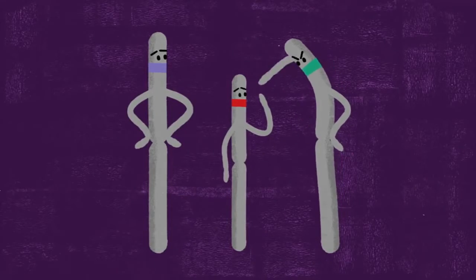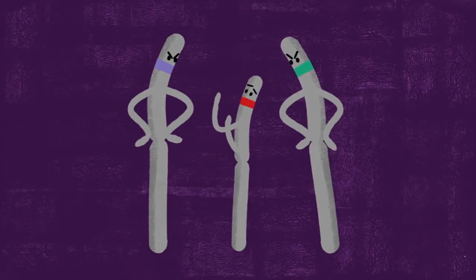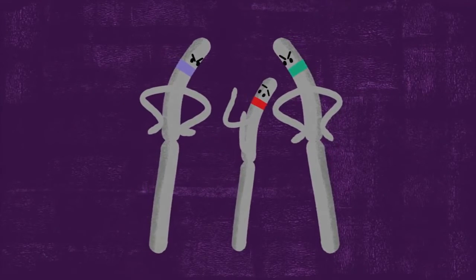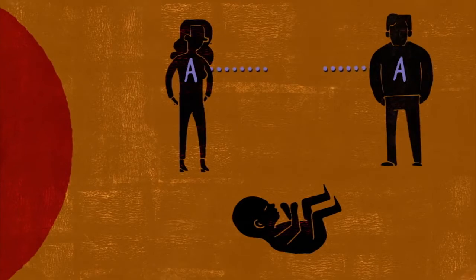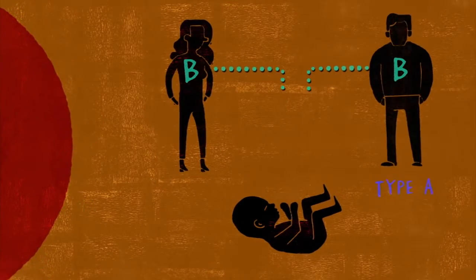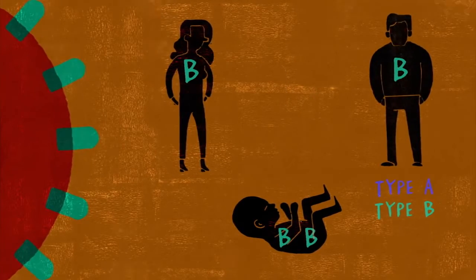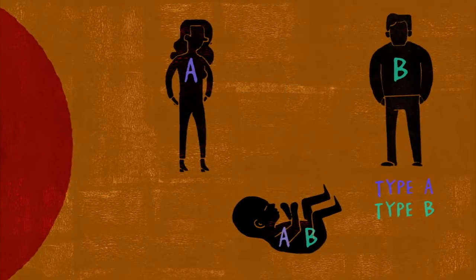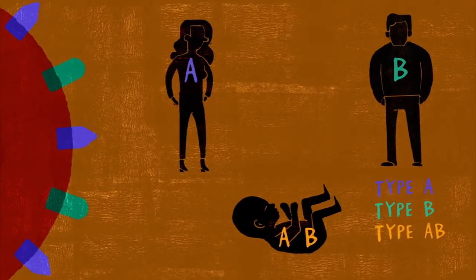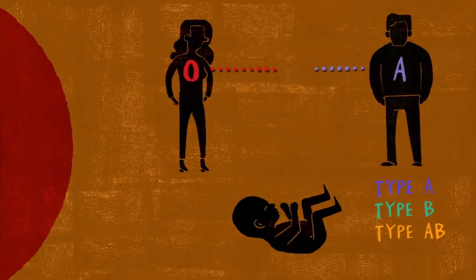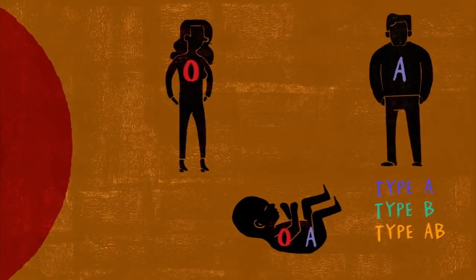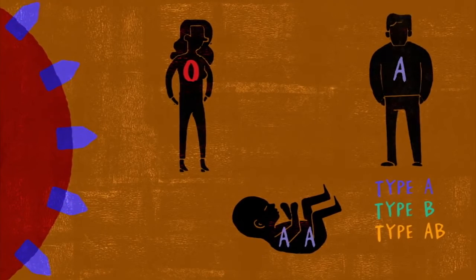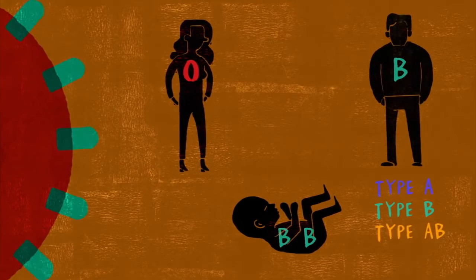For blood types, the A and B alleles are both dominant, while O is recessive. So A and A gives you type A blood, while B and B gives you type B. If you inherit one of each, the resulting co-dominance will produce both A and B antigens, which is type AB. The O allele is recessive, so either of the others will override it when they're paired, resulting in either type A or type B.